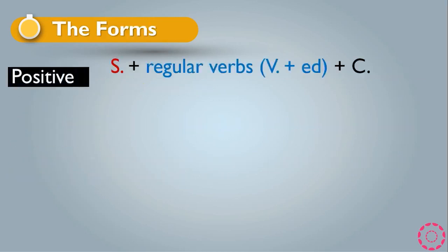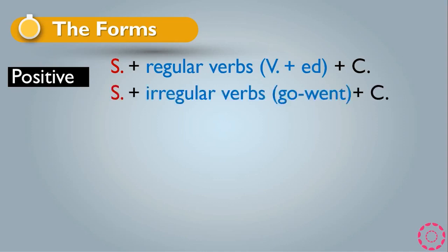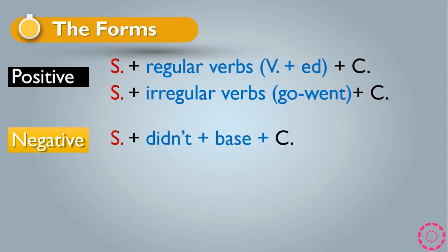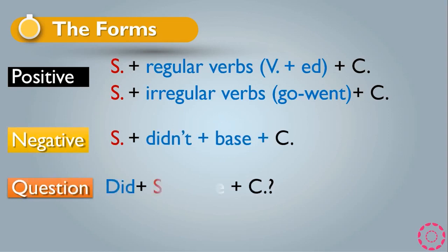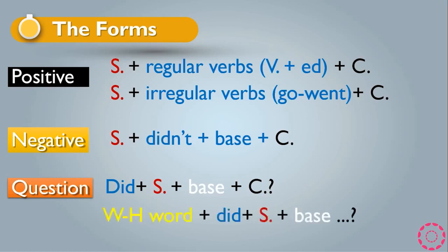The forms of past simple: for positive, we use subject plus a regular verb with -ed, or an irregular verb, plus complement. For negative, we use subject plus didn't plus base form plus complement. For questions, we have did at the beginning plus subject plus base form plus complement and a question mark. For wh-questions: wh-word plus did plus subject plus base form and question mark.